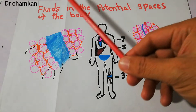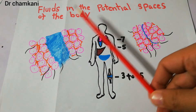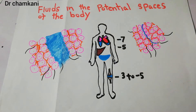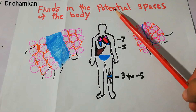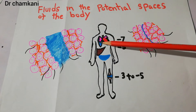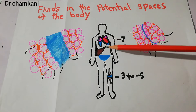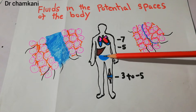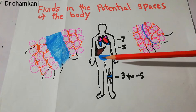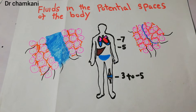In this lecture, we are going to talk about fluids in the potential spaces of the body. Potential spaces are basically cavities like the pleural cavity in the lungs, the pericardial cavity in the heart, the peritoneal cavity in the abdomen, and synovial cavities in the joints.